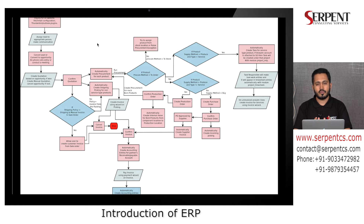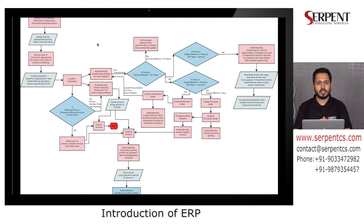That is how ERP is different from other ordinary software. In traditional software methodology, we have separate billing applications, separate warehouse management applications. Some are using only accounting for their localization — for example, in India we have Tally, in the US they have QuickBooks, and in the Middle East many use Sage, QuickBooks, or Panda Accounting. Those packages are very good at managing accounting only.